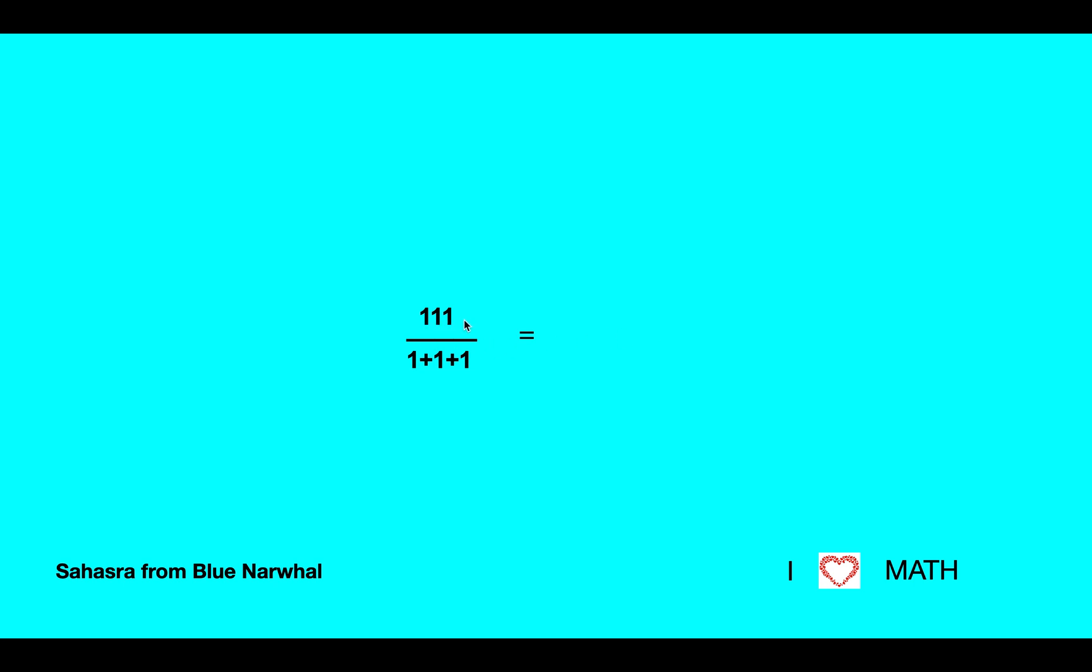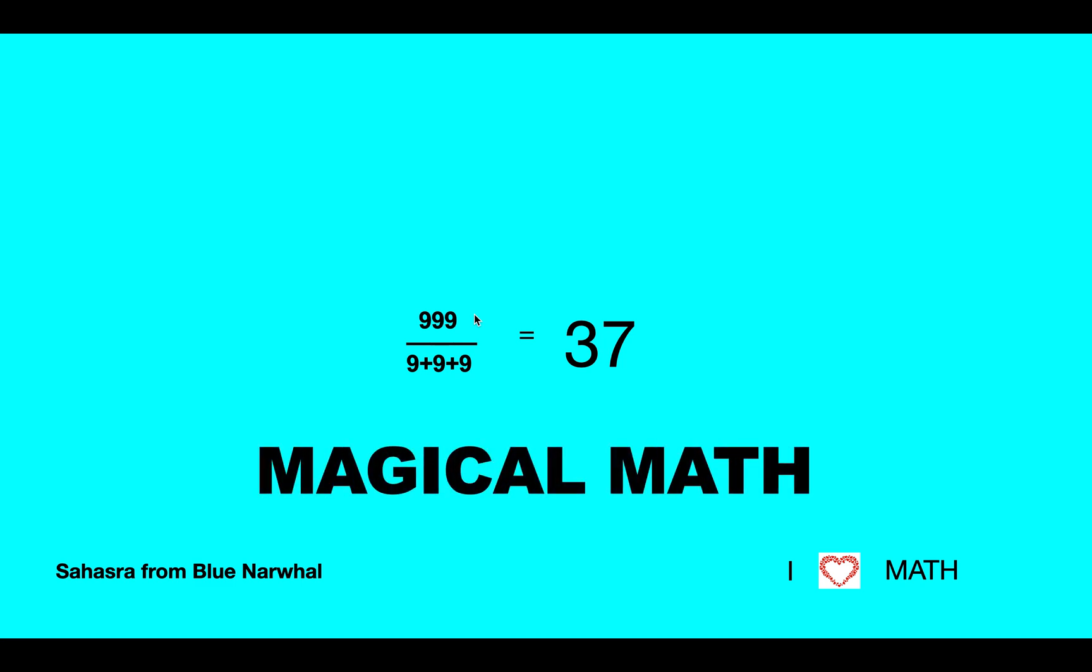So, to summarize: 111 divided by 3 equals 37, 222 divided by 6 equals 37, 333 divided by 9 equals 37, 444 divided by 12 equals 37, 555 divided by 15 equals 37, 666 divided by 18 equals 37, 777 divided by 21 equals 37, 888 divided by 24 equals 37, and last but not least, 999 divided by 27 equals 37. And that is magical math.